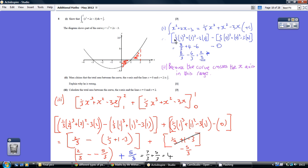First, substitute 2 into this. Then subtract the result when you substitute 0. Substituting 2 into this integral gives us 8/3 + 4 - 6.